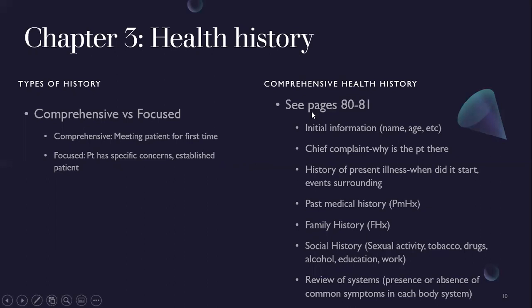Components of the comprehensive health history: initial information, chief complaint, history of present illness — when it started and surrounding events — past medical history, family history, social history including sexual activity, tobacco use, drug use, alcohol use, education and work. The review of systems is just noting presence or absence of common symptoms in each body system — for GI you might ask about nausea, vomiting, diarrhea; if they say no, you put negative.